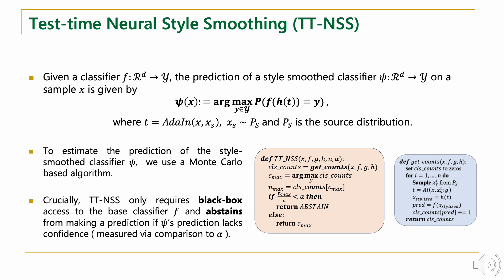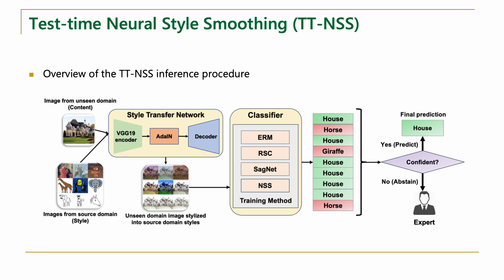Our inference procedure constructs a new classifier psi, which outputs the class that the base classifier F is most likely to return when the test image is stylized into the styles of images from the source domain. Since computing this probability exactly is not possible, we use a Monte Carlo-based algorithm to estimate the prediction of the style-smooth classifier on a test input. Our procedure only requires black-box access to the model and does not significantly increase computational overhead. If the prediction of the style-smooth classifier is not confident enough, the procedure abstains rather than producing a risky decision. Overall, given a test input, our procedure first restylizes it into the styles of the source domain using N random style images, then aggregates the classifier's predictions on these N samples. If the majority have the same prediction, the procedure returns that prediction and abstains otherwise.